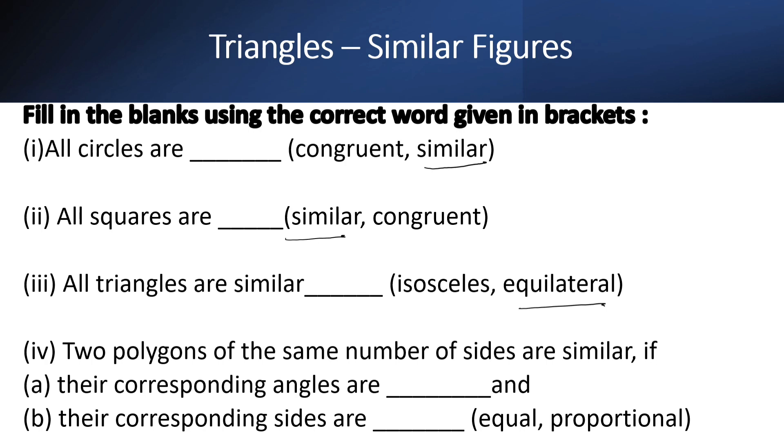Two polygons of the same number of sides are similar if their corresponding angles are equal and their corresponding sides are proportional.